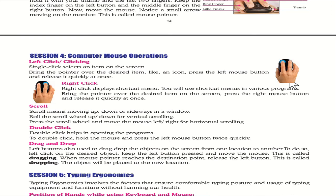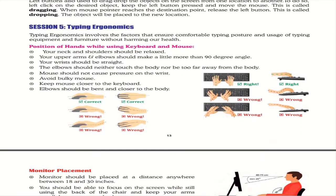Typing ergonomics involves factors that ensure comfortable typing posture and usage of equipment without harming health. Your neck and shoulders should be relaxed. Your upper arm and elbow should make a little more than a 90-degree angle. Your wrist should be straight. The elbow should neither touch the body nor be too far away from it.